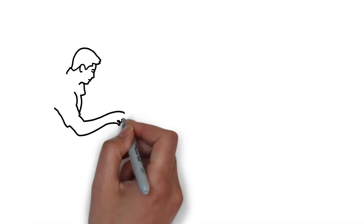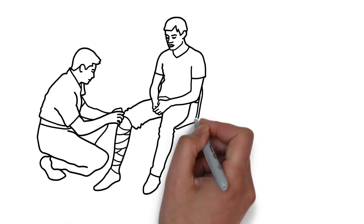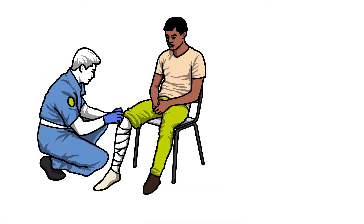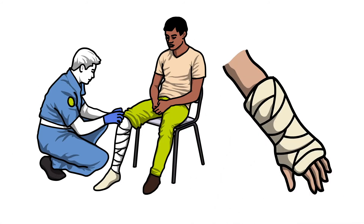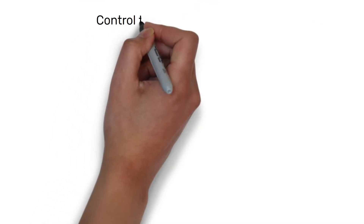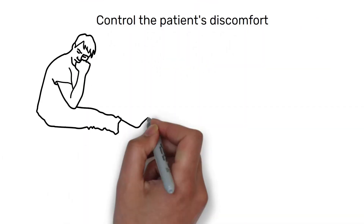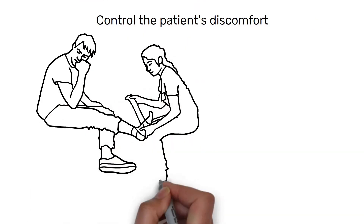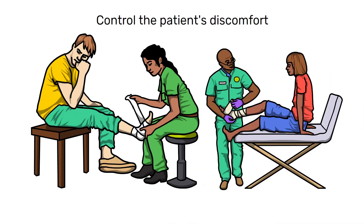Nursing Care Plans. The goal of developing nursing care plans for clients with fractures, whether they are in a cast or traction, is to avoid problems throughout the healing process. The nursing team can control the patient's discomfort and avoid problems by doing an appropriate nursing evaluation on a frequent basis.